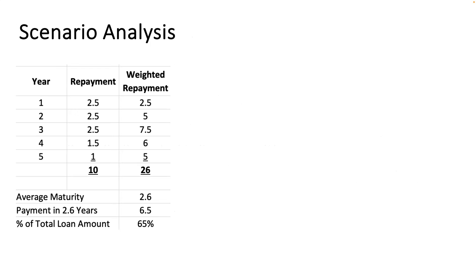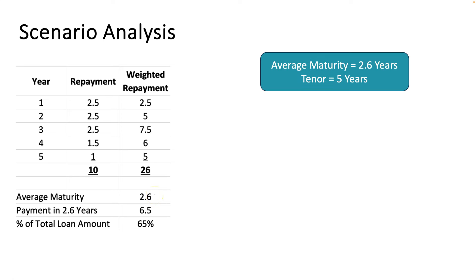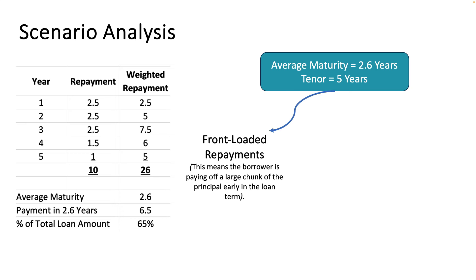Let's take some scenario analysis. With the same 5-year, 10 lakh example, if repayments are higher in the first three years and then come down, and the total weighted repayment is 26, dividing by 10 gives an average maturity of 2.6 years. This means front-loaded repayment — the borrower is paying a large chunk of principal early. In fact, 6.5 lakhs out of 10 lakhs is repaid within 2.6 years, meaning 65% of loan repayment happens within 2.6 out of 5 years.